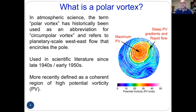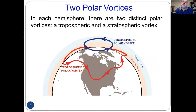Nowadays, most people looking at the dynamics look at potential vorticity. The vortex is a region with high potential vorticity, or PV, and the strong winds occur at the edge of the vortex where there are large gradients.